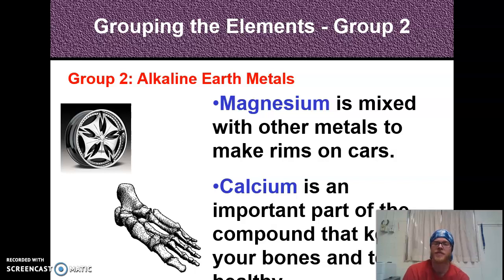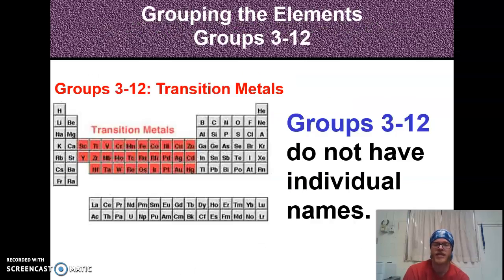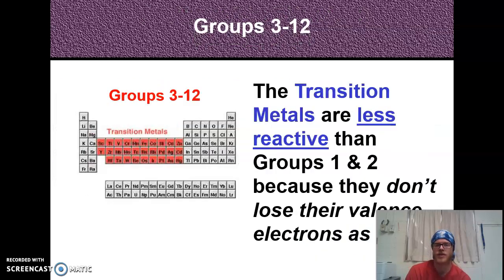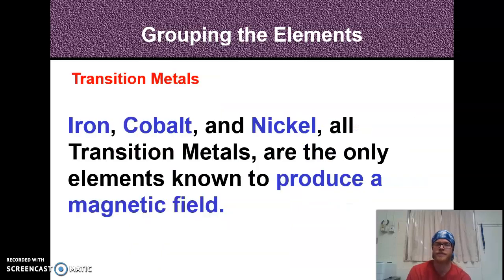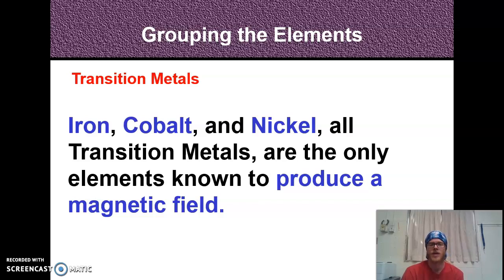Magnesium is mixed with other metals to make car rims, and calcium is an important component that keeps your bones and teeth healthy. Groups 3 through 12 are the transition metals — they don't have individual group names, they're less reactive, and they don't lose valence electrons as easily. Silver, gold, iron, cobalt, and nickel are all transition metals, and they are the only elements known to produce a magnetic field.